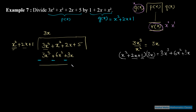3x³ minus 3x³ = 0 — यह cancel। अगर यह cancel नहीं हो रहा तो गलत quotient से multiply किया है। x² - 6x² = -5x²। फिर +2x - 3x = -x। और +5 बचा। तो अब -5x² - x + 5 है।